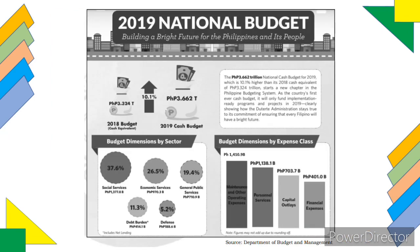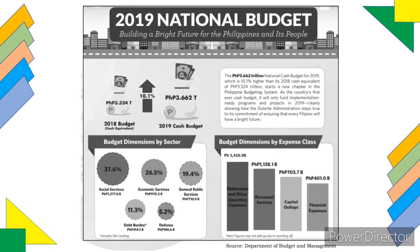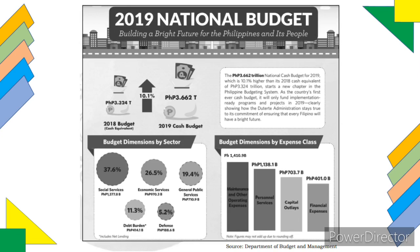See this infographic containing details of the 2019 national budget. Let us analyze its content by answering these questions. Get ready to comment and write your answers in the comment section. First, how much was the total amount of the 2019 national budget? Can you easily identify the data? If your answer is 3.662 trillion pesos, then you are correct — it is shown right here.